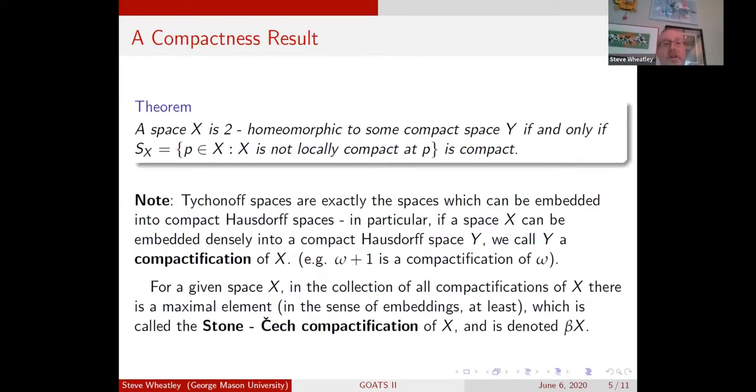I was able to get a compactness result, a nice result in of itself. It says that a space X is 2-homeomorphic to a compact space if and only if this set that I call S_X - the points where X is not locally compact - if that set itself is compact. So the place where it's not locally compact is somehow small. That's a nice result.